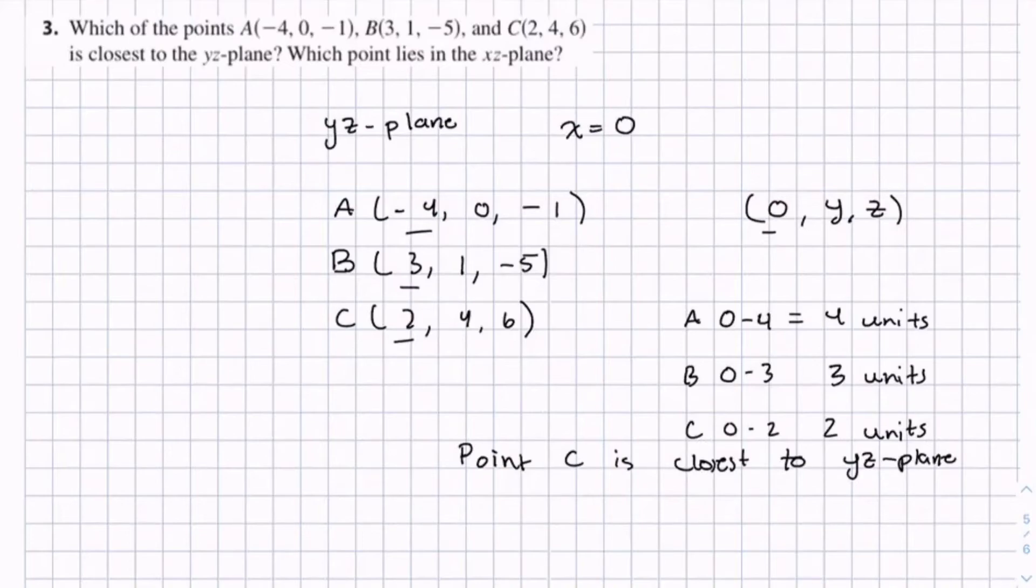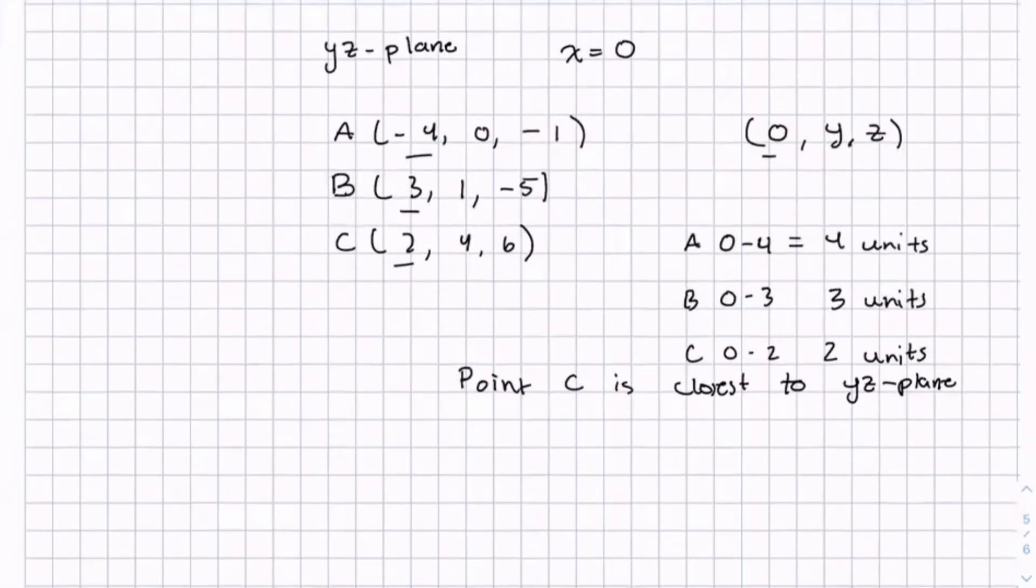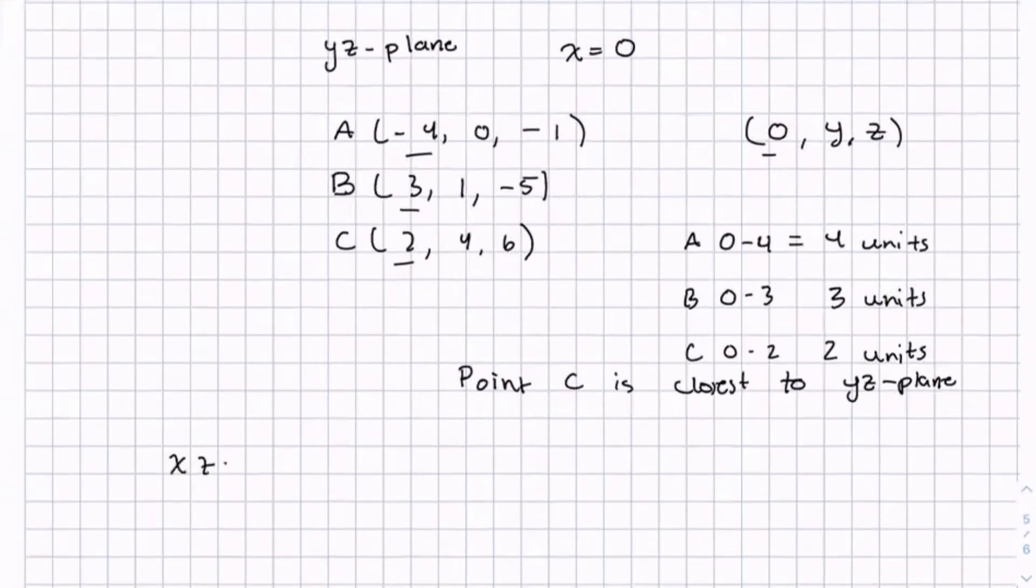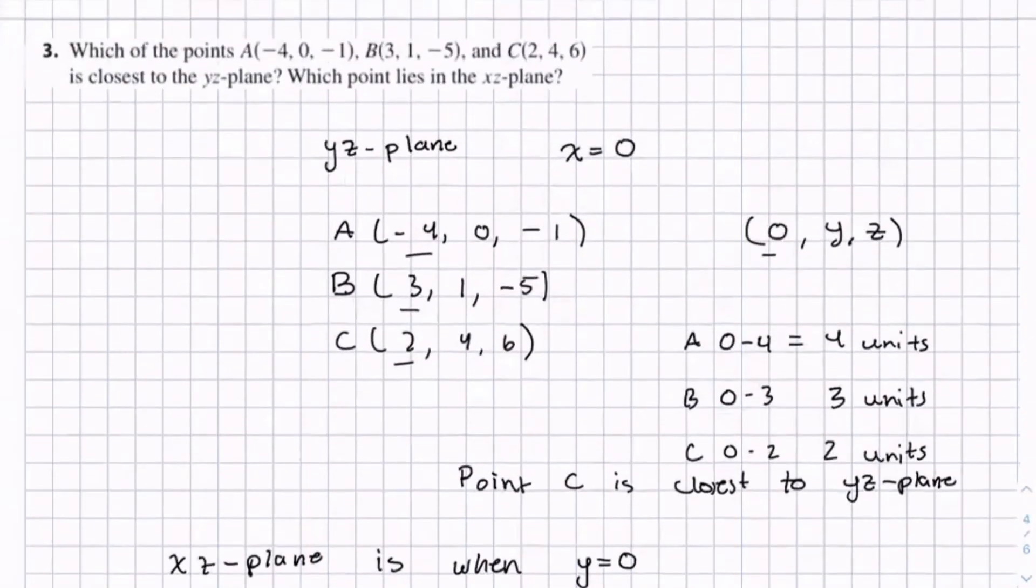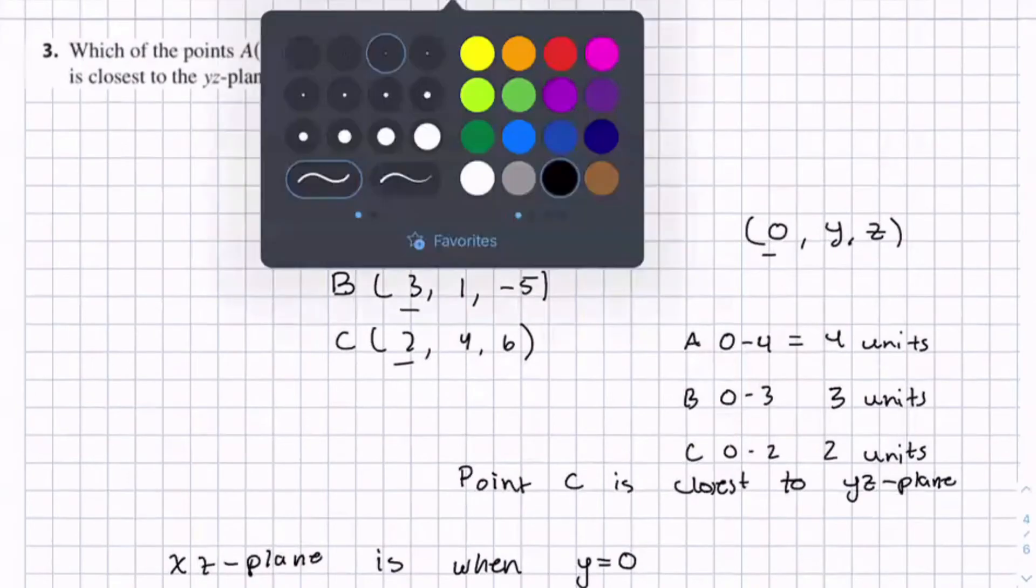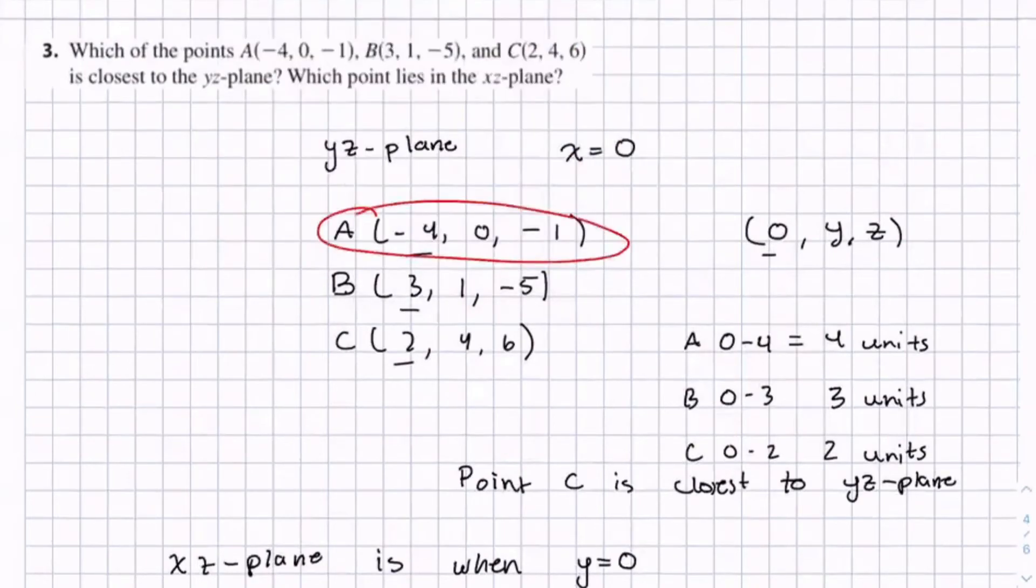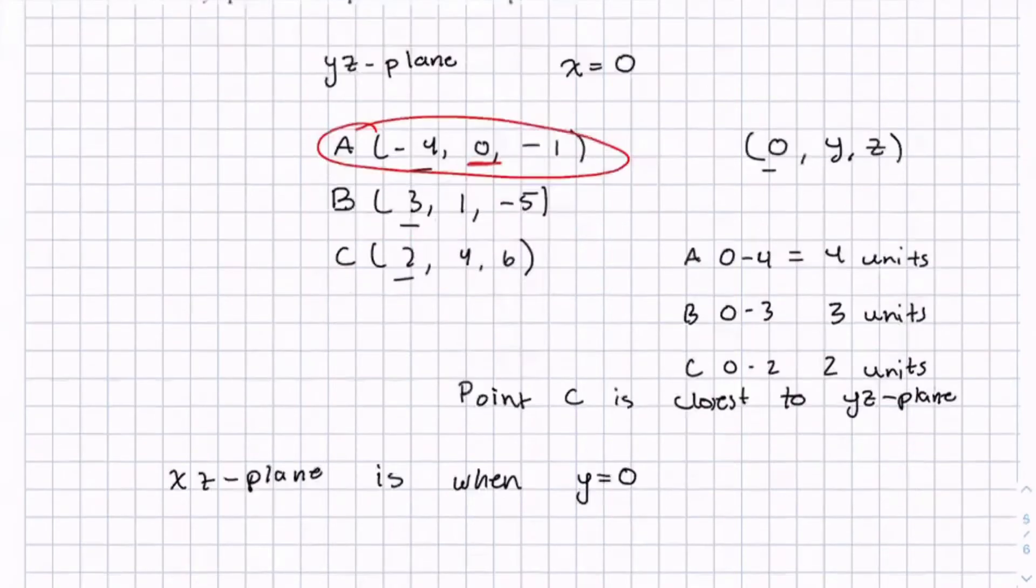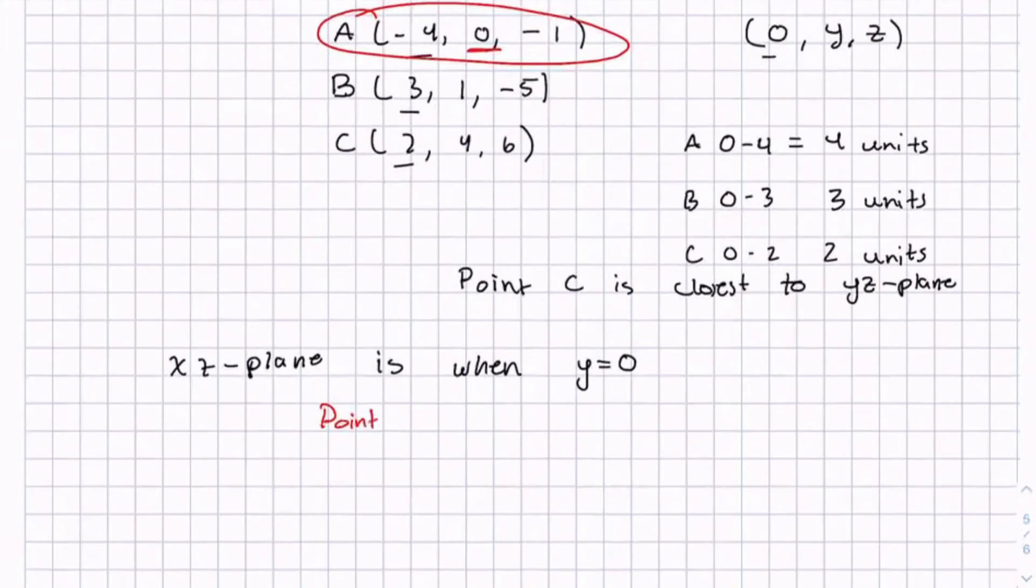So the second part of this question is, which point lies in the xz-plane? So in the xz-plane is when y equals 0. So whichever point has a 0 for the y component lies in the xz-plane. And if you look at our three points, you can see that point A has a 0 in its y component. So point A lies in xz-plane.